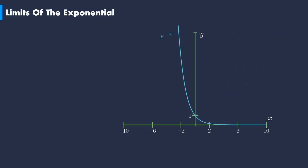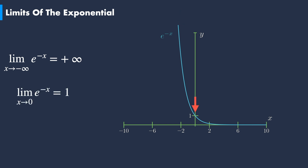If we study the limits of the inverse of the exponential function, we can see that when x takes large negative values toward minus infinity, the inverse exponential diverges to plus infinity. On the other hand, when x is close to the value of 0, the inverse exponential converges to the value of 1. And finally, when x goes toward large positive values, the exponential vanishes toward 0.